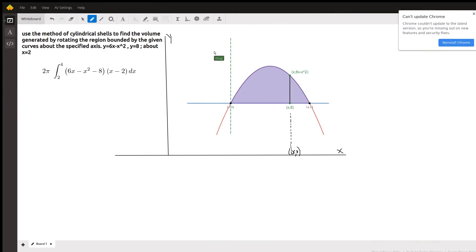Okay, we're going to revolve this purple region around this green dashed line. This curve right here is the parabola, a downward opening parabola, y equals 6x minus x squared.